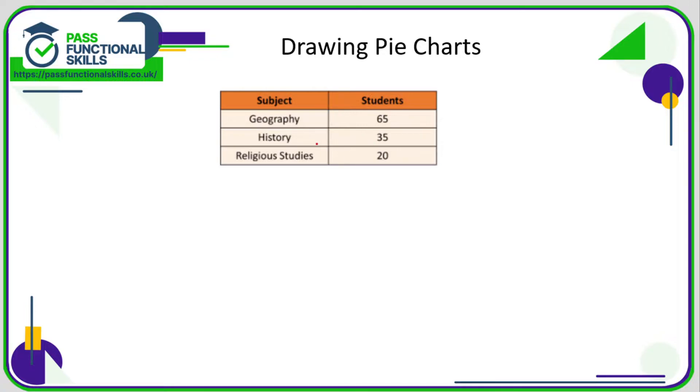Now drawing pie charts. Let's say we wanted to draw a pie chart that showed students' favorite subject. So first of all, how many students are we dealing with in total? 65 for geography, 35 for history, and 20 for religious studies. So there are 120 students in total.